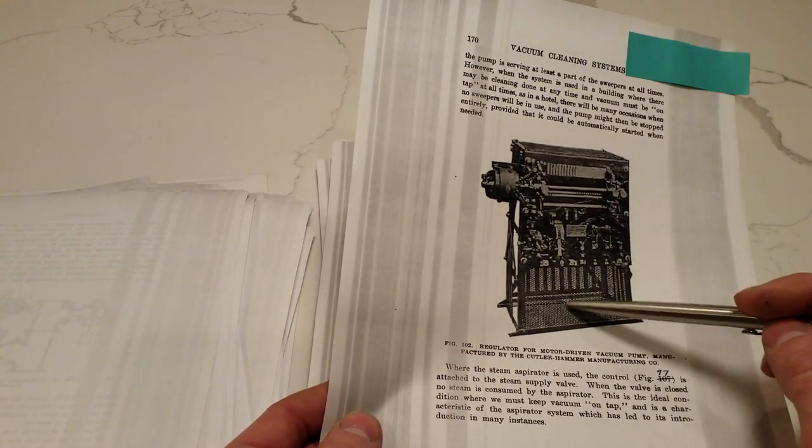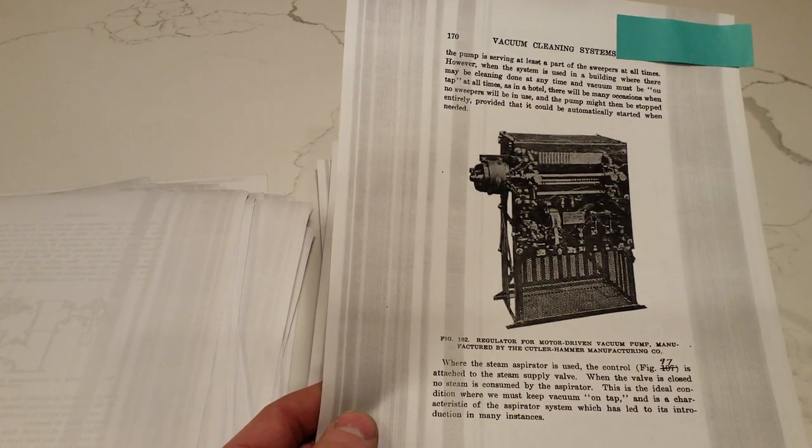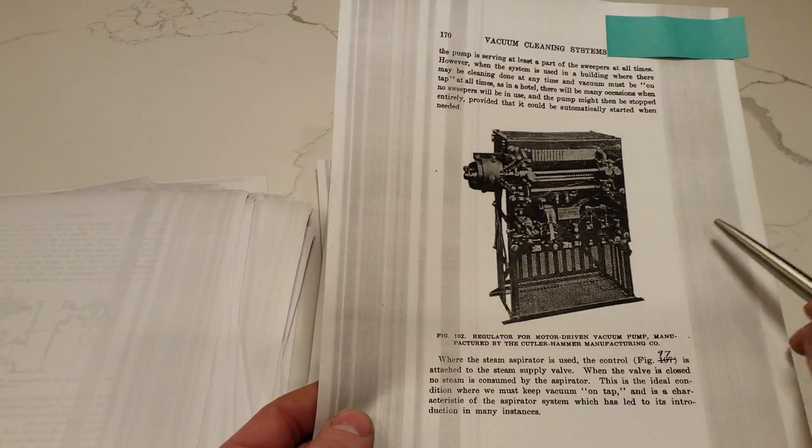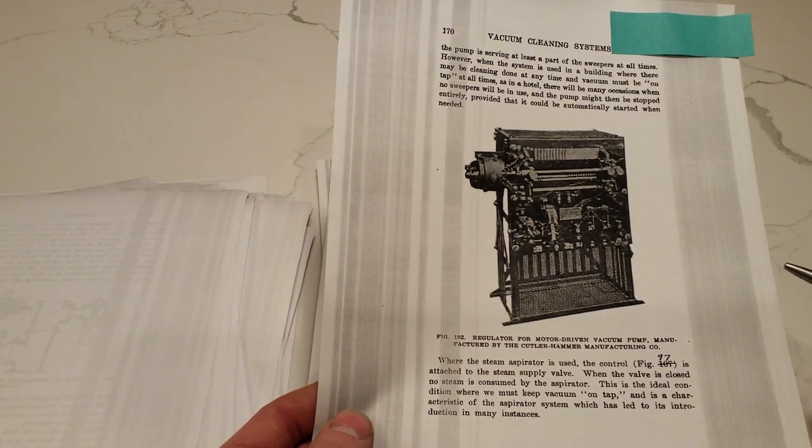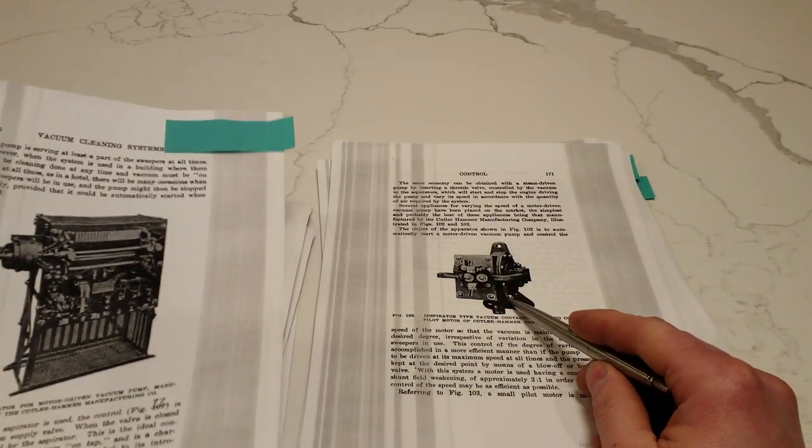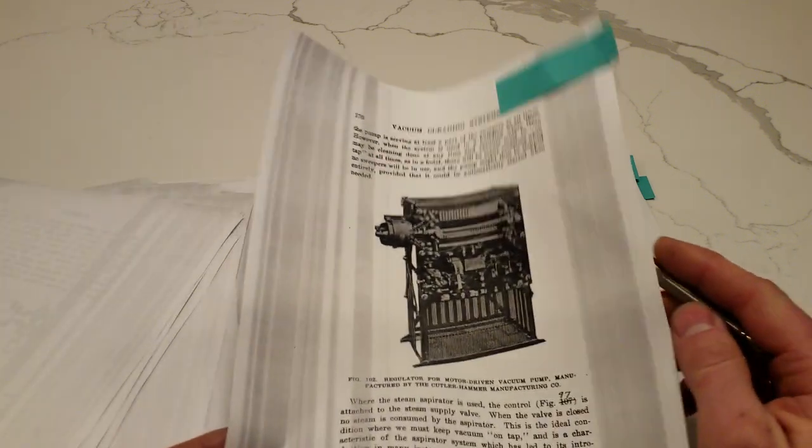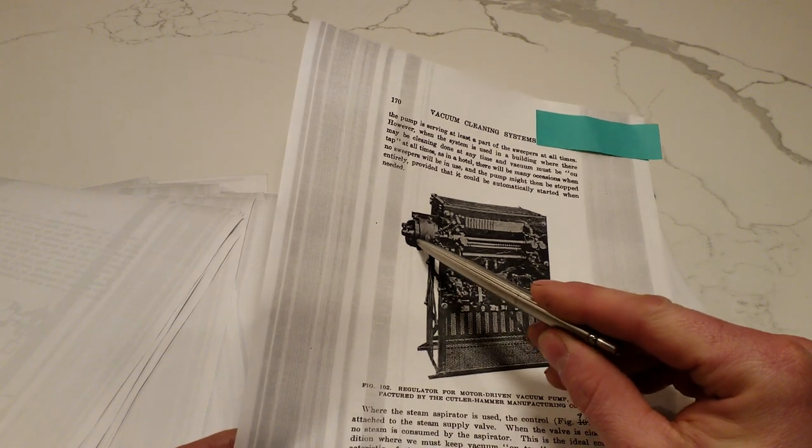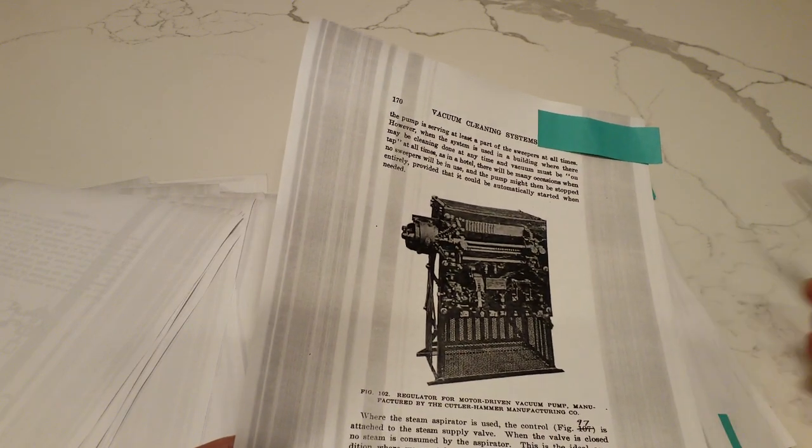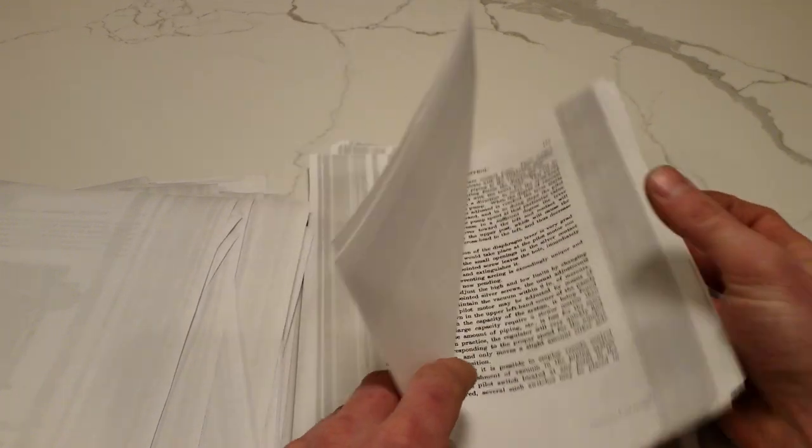This is interesting. This gizmo is all to regulate the amount of vacuum or the speed of the motor on a reciprocating central vacuum pump. To produce a consistent level of vacuum depending on how much air is being moved. How many operators are on the system. So, this will take, this diaphragm would have been connected to the piping system. And, depending on the level of vacuum, it would vary the speed of the pilot motor, which is this guy. And, the pilot motor would then drive a rheostat, varying the speed of the turbine motor.